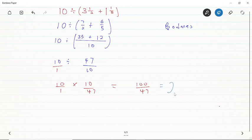Now 47 times 2 is 94, and 100 minus 94 gives us 6. So we have two whole number six over 47 as our final answer.